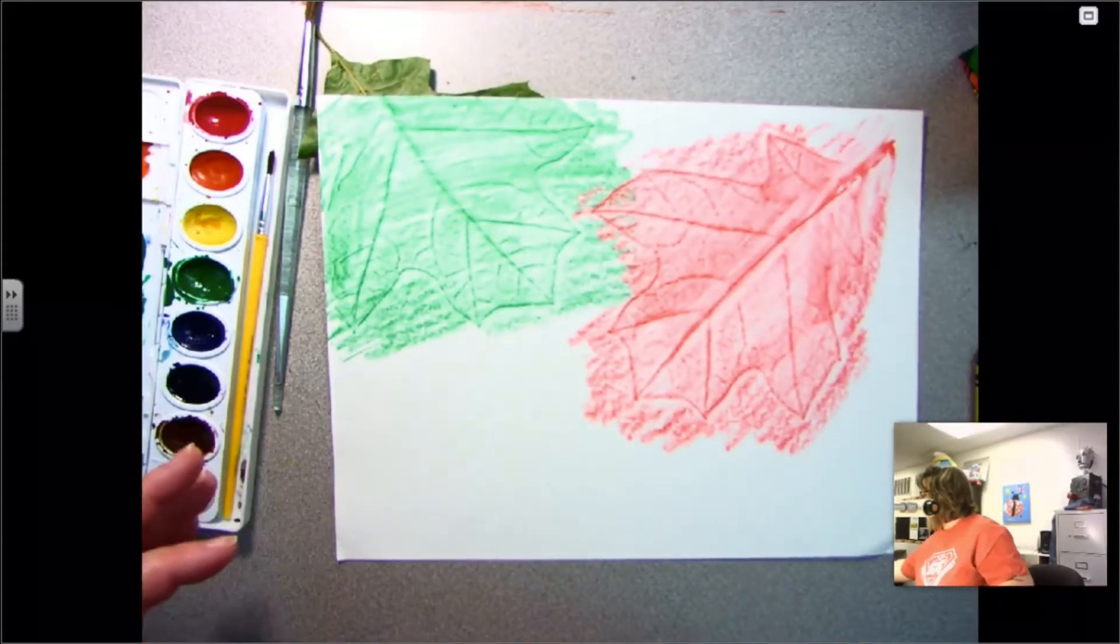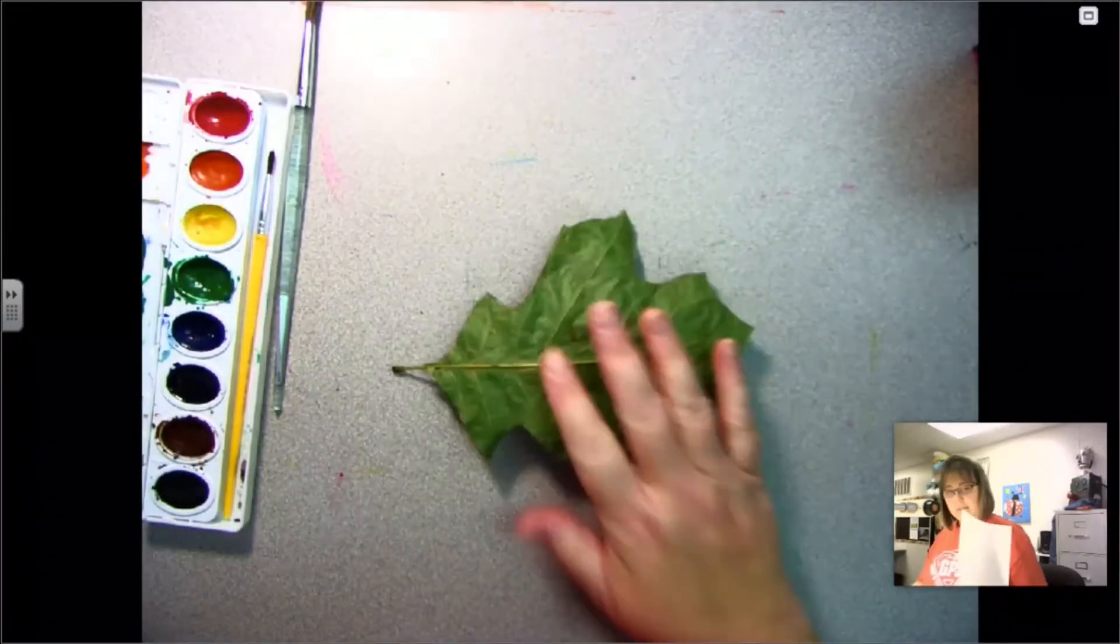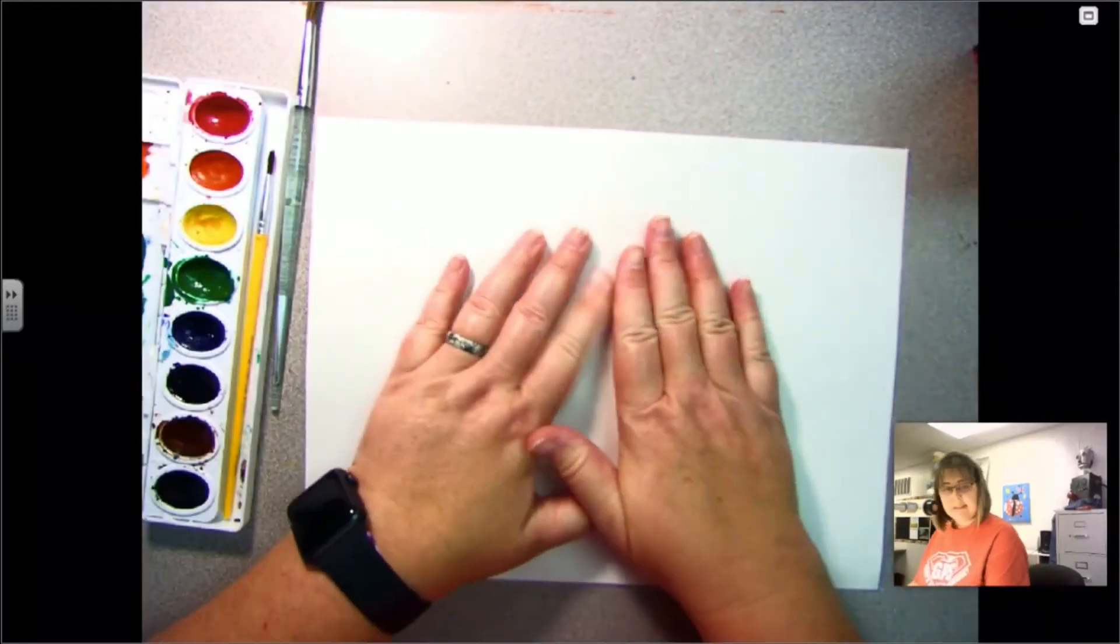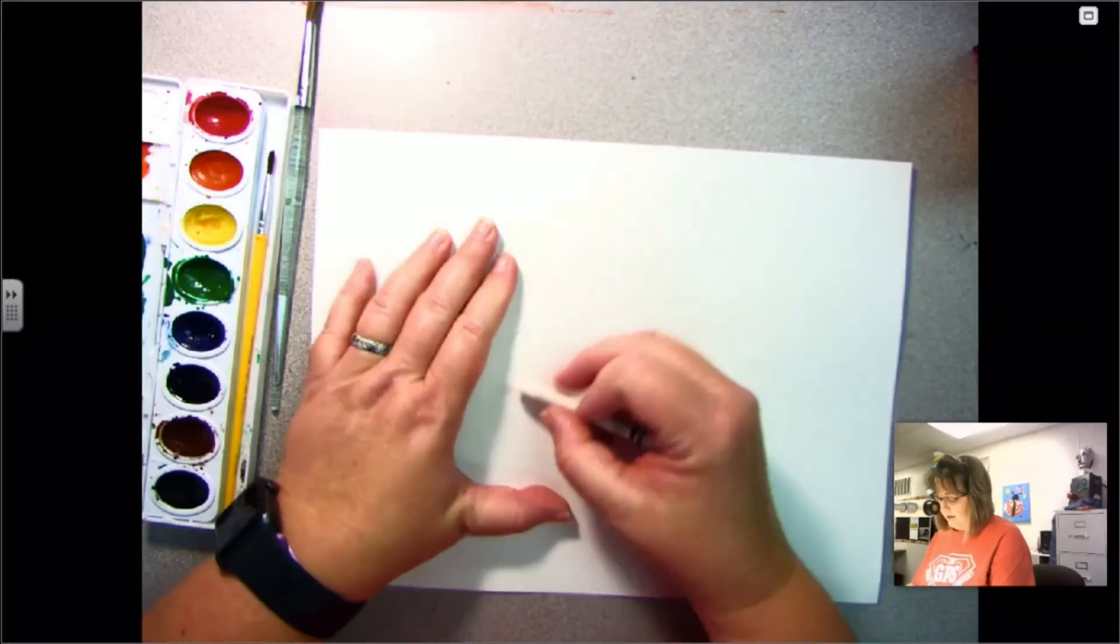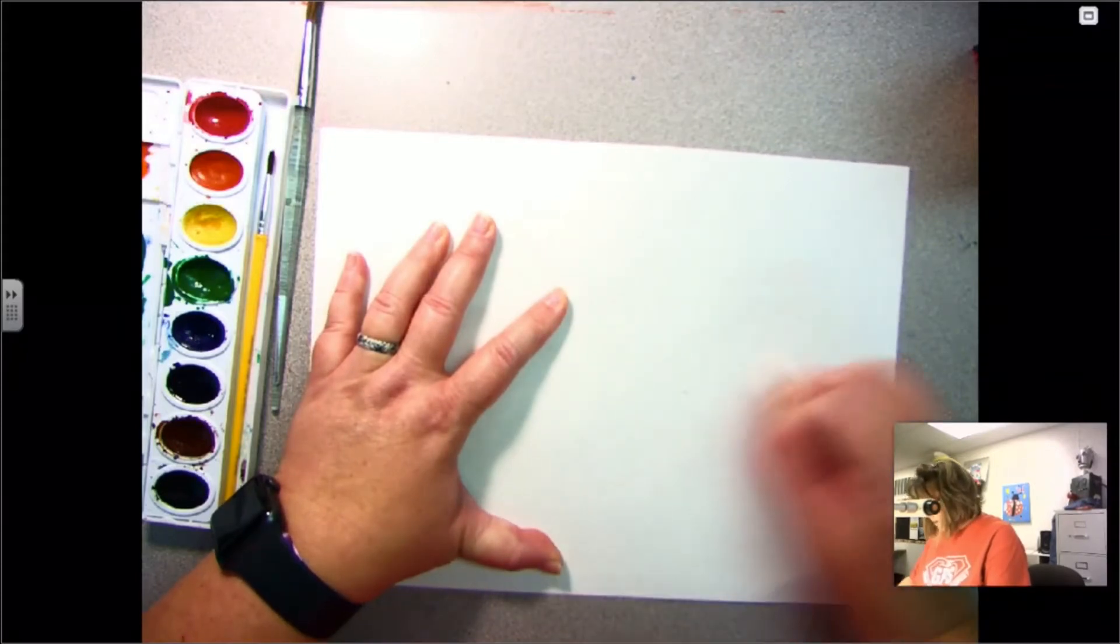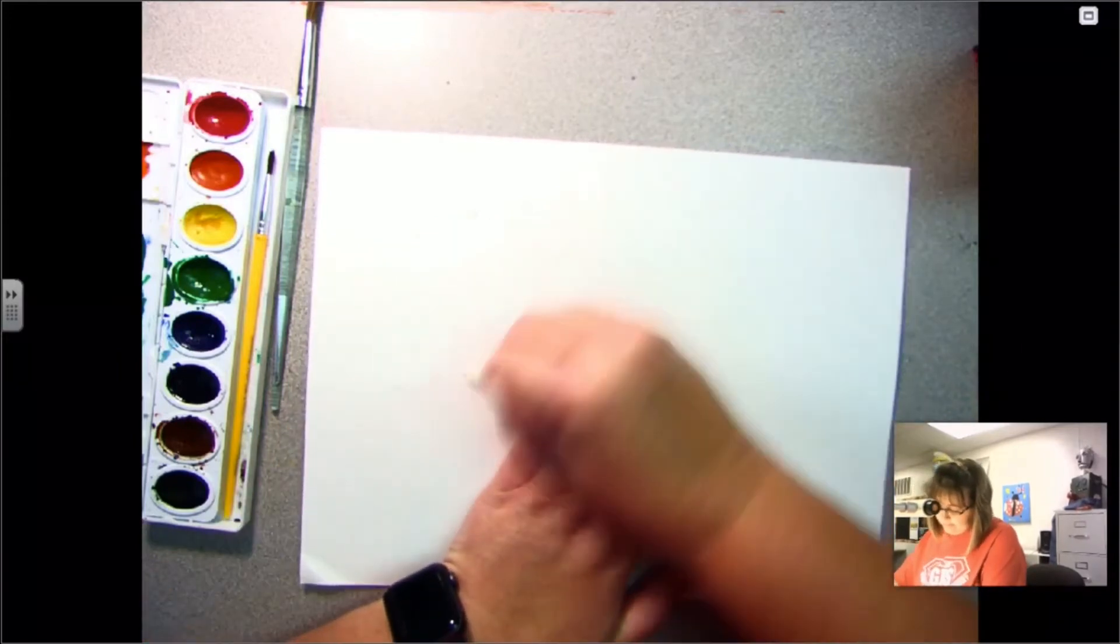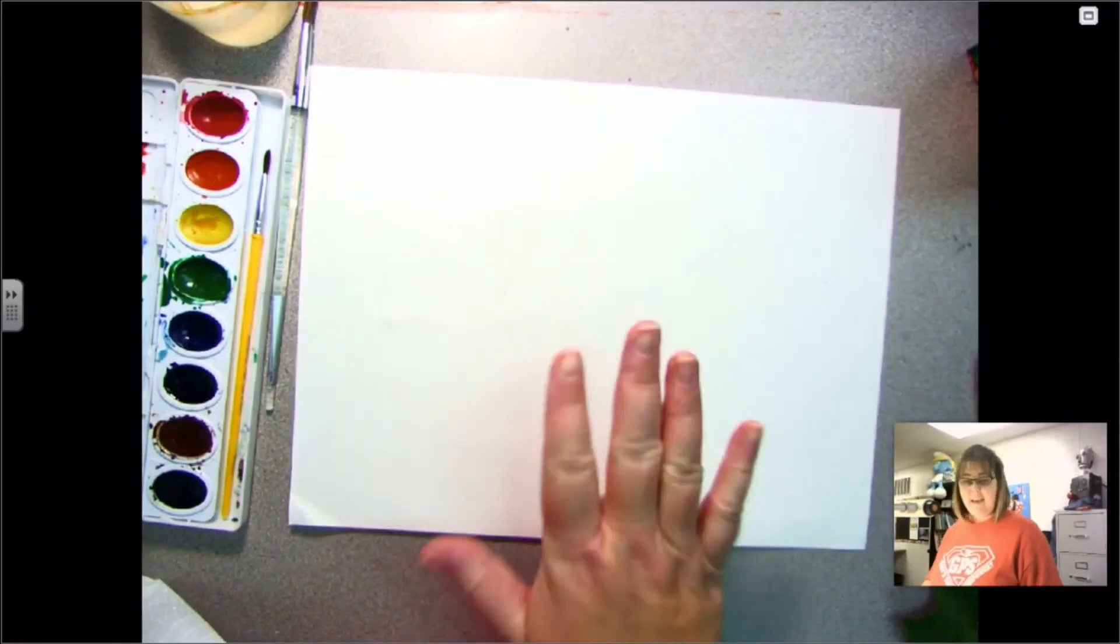Another thing that you can do—remember I said I had lots of paper because I'm trying different things—another thing that I can do is I can take my leaf, still put paper on top, and instead of using a color I can use white. I can rub with the white crayon, and you might ask, well, why are you doing that? Because you can't see it. You're gonna see why in just a minute.